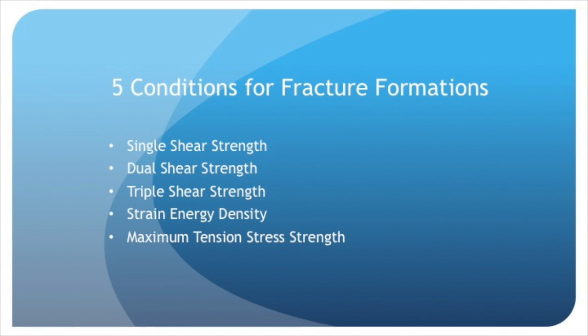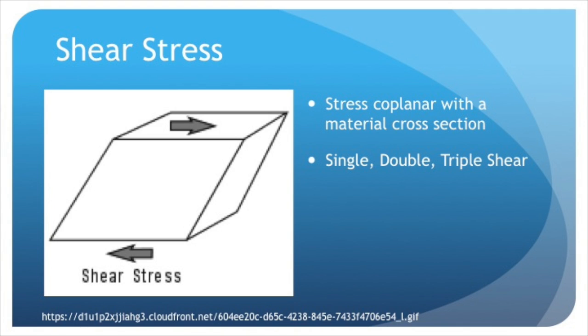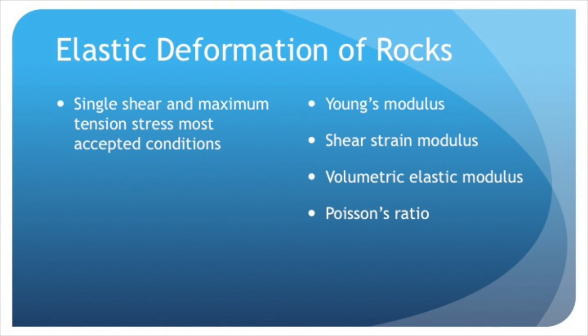The five conditions that make fractures in formations possible are single shear strength, dual shear strength, triple shear strength, strain energy density, and maximum tension stress strength. Shear stress is the component of stress co-planar with the material's cross-section. The most accepted of these conditions are the single shear strength principle and the maximum tension stress. Young's modulus, shear strain modulus, volumetric elastic modulus, and Poisson's ratio are used to interpret elastic deformation of rocks. Young's modulus is used to help with rock tensile strength, the shear strain modulus for shear strength, the volumetric elastic modulus for compressive strength, and Poisson's ratio for the lateral relative compressibility.